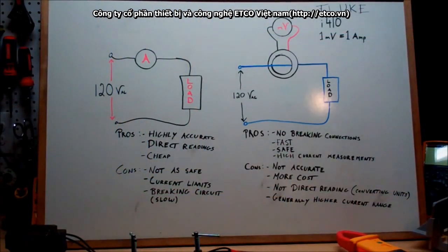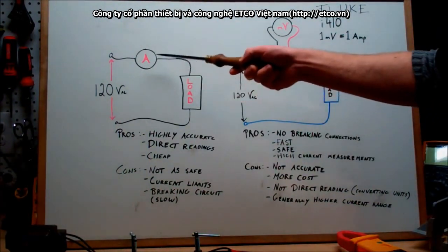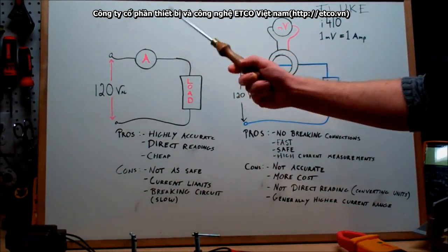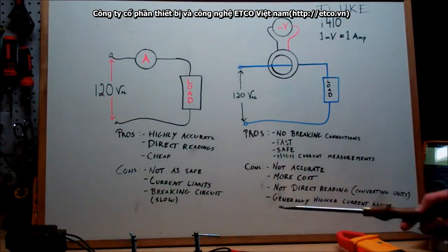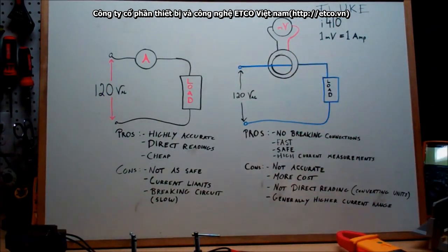Now as you can see here I've got two illustrations. First off we have our classic multimeter measurement, where you have to break the circuit and throw your ammeter in series in order to take a measurement. And there is some pros and there is cons to this.